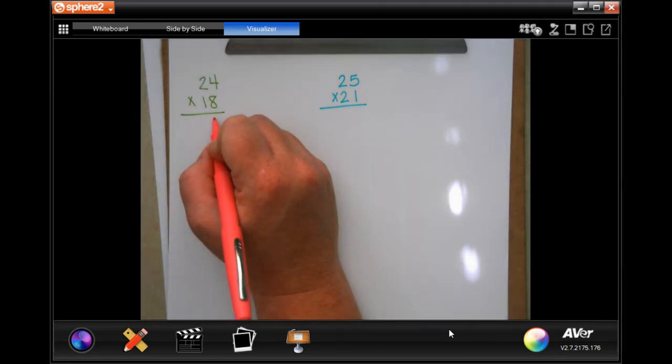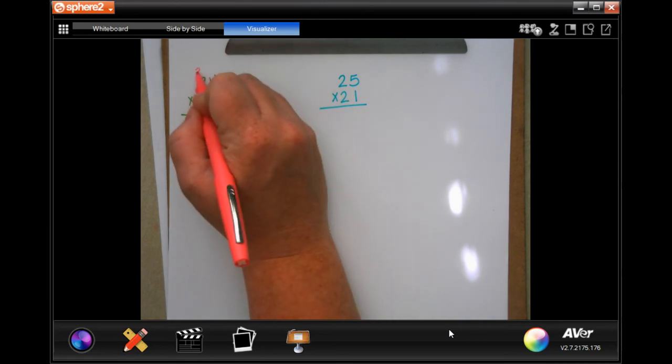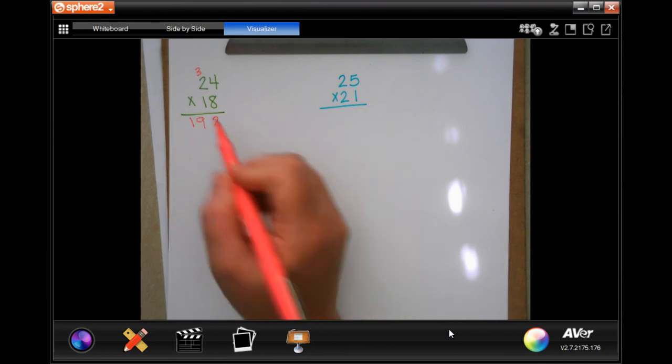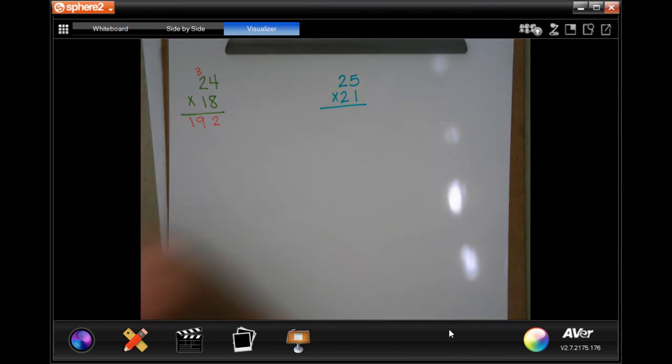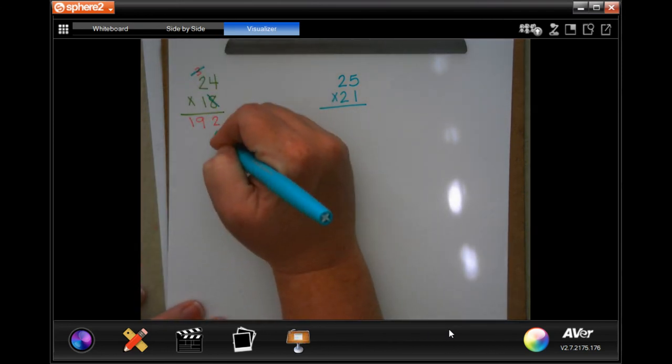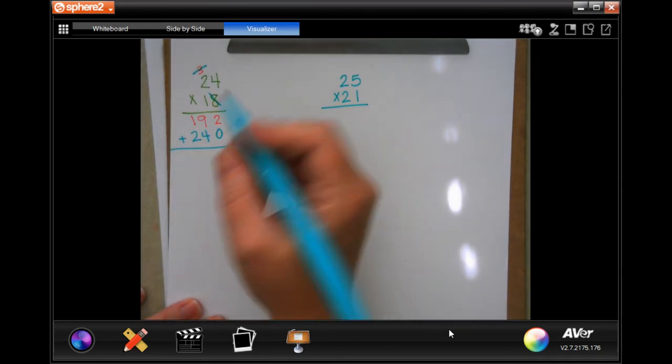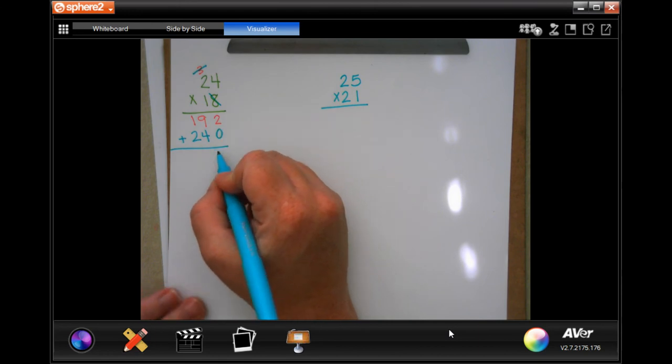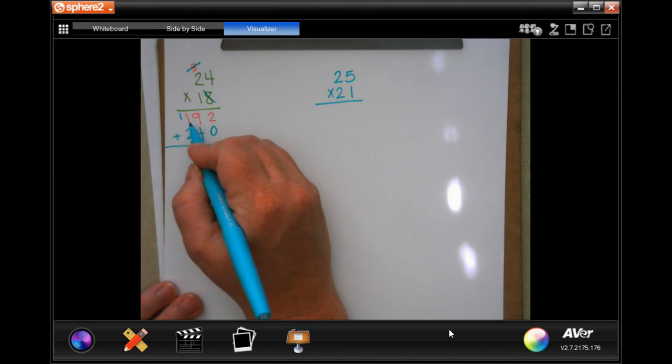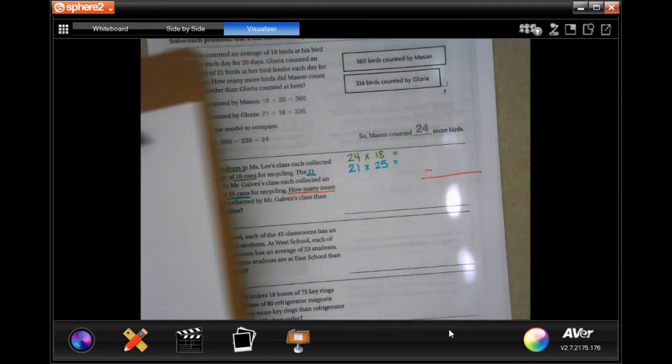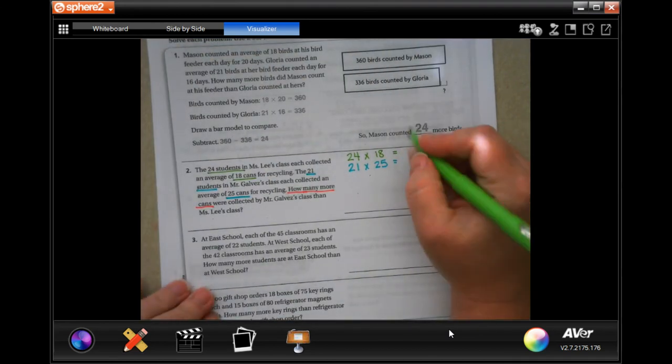So 8 times 4 is 32. Two down, carry the three. 8 times 2 is 16, plus 3 more is 19. We're going to go and pick, tack, toe, and then 1 times 24 is 24. I'm going to add those up. So 2 plus nothing is 2. 9 plus 4 is 13. Carry that 1. 1 plus 1 is 2, plus 2 more is 4. So 432 cans for this one.